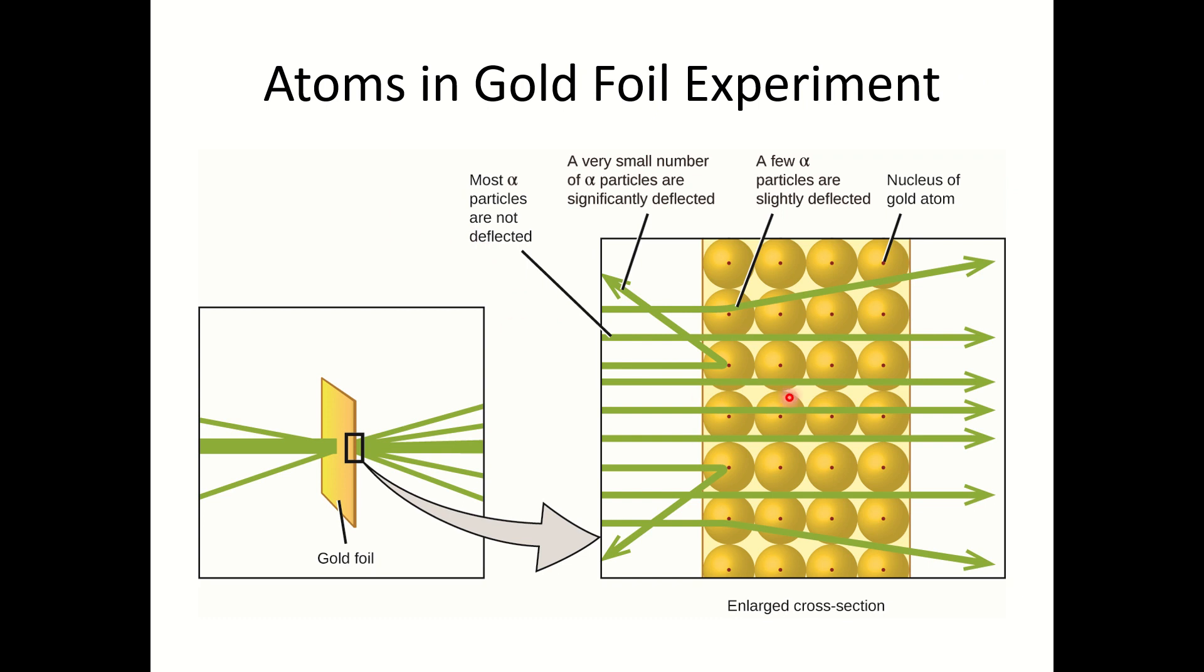So if we imagine here we've got our gold atom here, we've got our little positive matter in the middle and we've got mostly empty space. So Rutherford imagined that atoms were mostly composed of empty space. This explains why most of the alpha particles go through, because the atom is mostly empty space. So the alpha particles travel straight on through.